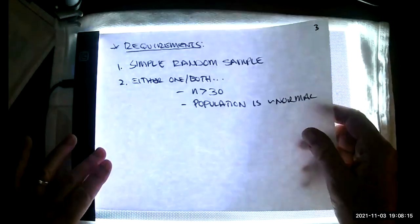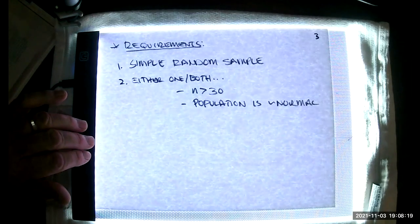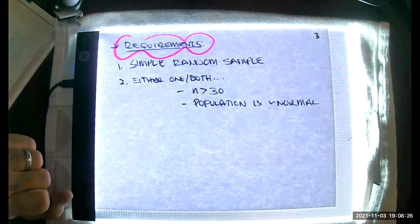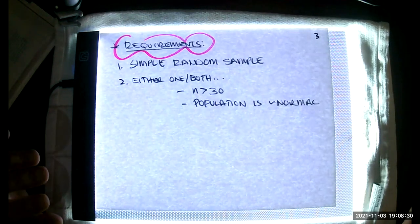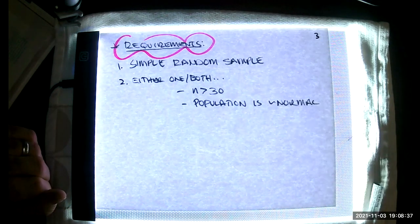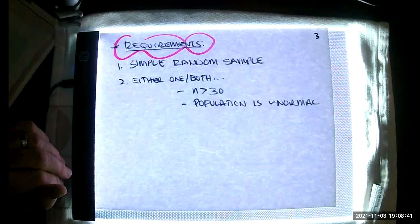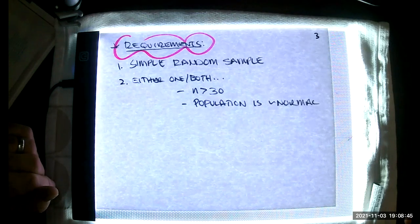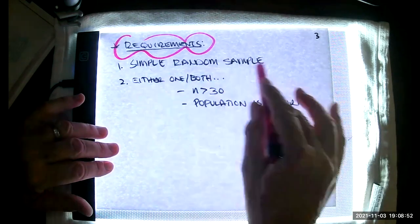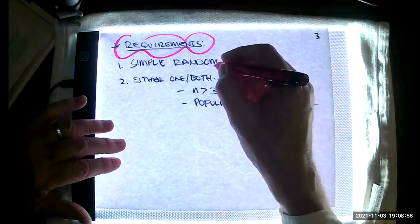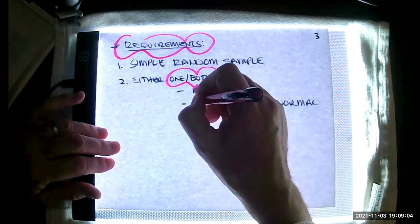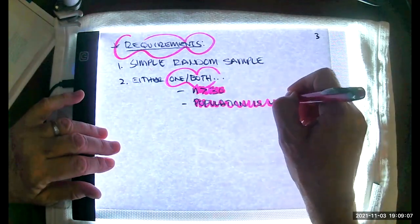If we're going to estimate a population mean using a sample, we have some requirements. These requirements need to be met. If they're not met, your calculator will never know. But your confidence interval won't be really confident. For our confidence interval to actually hold water and to have weight, it needs to be a simple random sample. Without this, nothing good happens. And then either one or both: you need a sample size of n greater than 30 and/or the population is approximately normal.